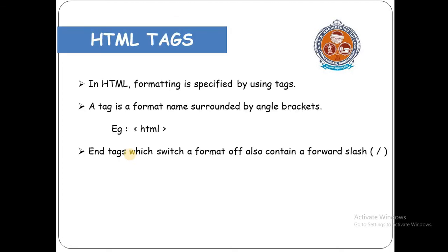First of all, we are going to see what is an HTML tag. An HTML tag is used to specify formatting in HTML. We already know that HTML is a HyperText Markup Language — this is not a programming language, it is a markup language, meaning it is specified by some tags. There are some predefined tags. A tag is a format name surrounded by angle brackets — the less than and greater than symbols. For every opening tag there will be an end tag, represented by a forward slash.